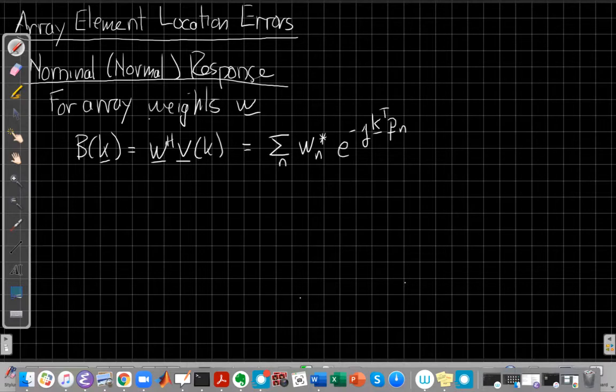We're going to develop our model about the array element location errors. This assumes you've already seen the first video about the conceptual big picture of what's happening and how we're going to model it. If you haven't seen that first video, stop this one and go watch it first.